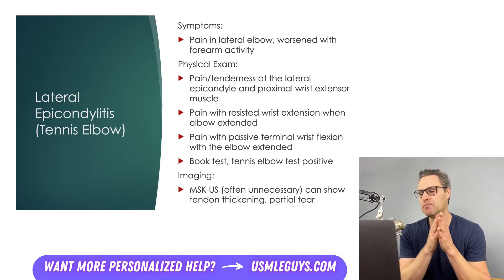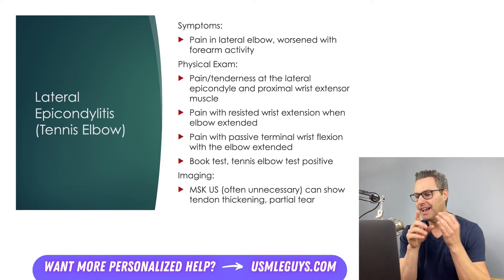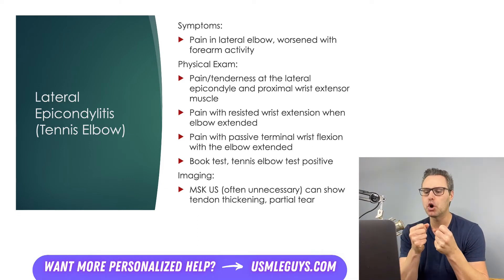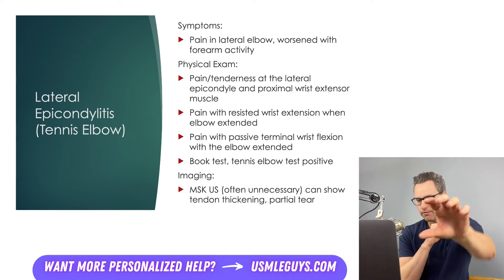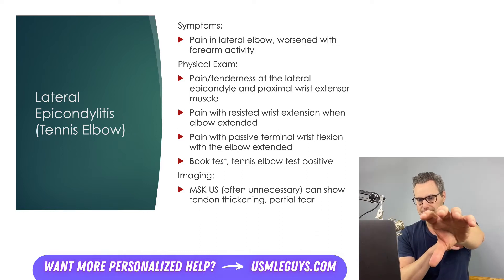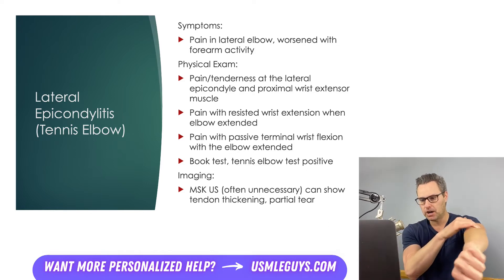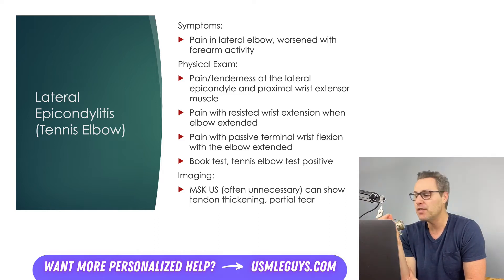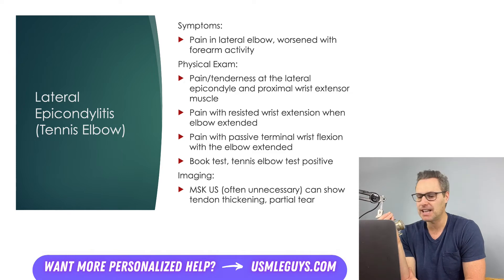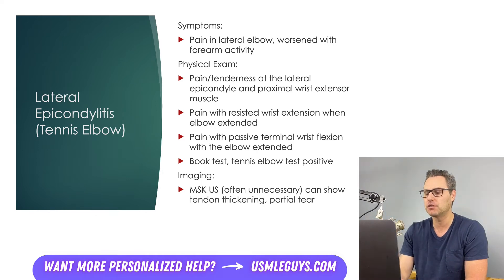Specific physical exam maneuvers to test for lateral epicondylitis include the book test, where the patient holds a heavy book on the affected side with the elbow fully extended and palm facing down. Pain in the lateral epicondyle makes that test positive. The tennis elbow test is performed by placing the patient's extended elbow in one of the physician's hands with their thumb on the lateral epicondyle; the patient makes a fist, pronates the arm, and radially deviates and extends the wrist while the physician resists. The test is positive if the patient feels pain in the lateral epicondyle.